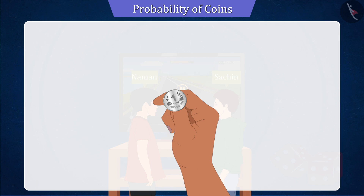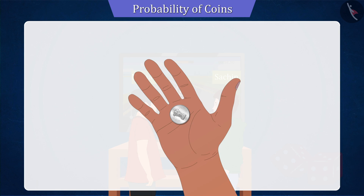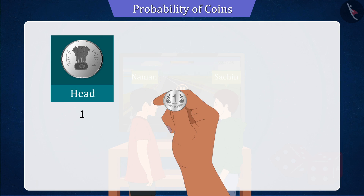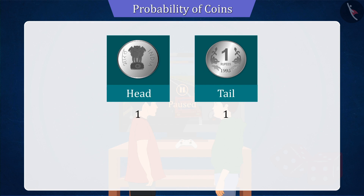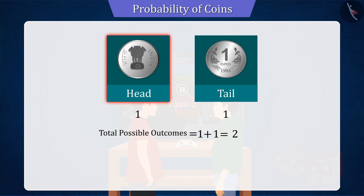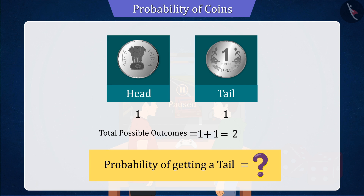So let's first look at the outcomes when the coin is tossed. As you can see, when the coin is tossed, it gives only two possible results, which will be either the head or the tail. But now the question is, what is the probability of getting the tail?